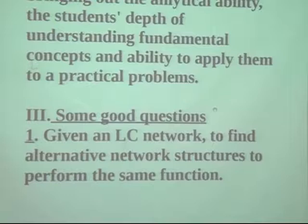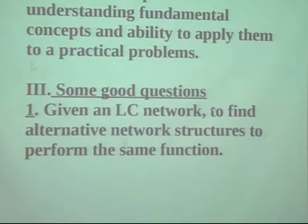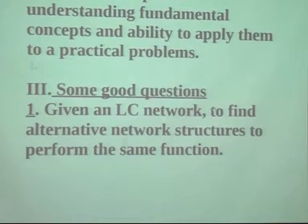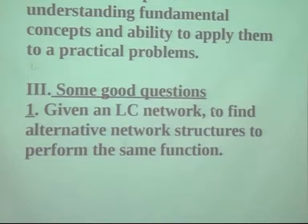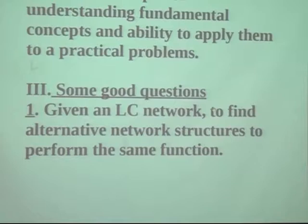Here is an example from network theory: given an LC network, find alternative network structures to perform the same function. This requires the student to understand what is the Foster form, what is the Cauer form, and what can be done by mixing the two. Theoretically, you find at least four or five possibilities, and from those you choose the best according to your design criteria — for example, minimum inductance, minimum capacitance, or having all capacitances grounded.